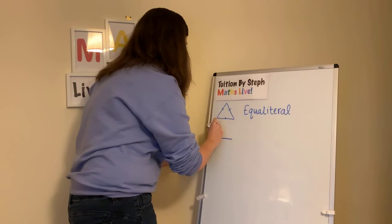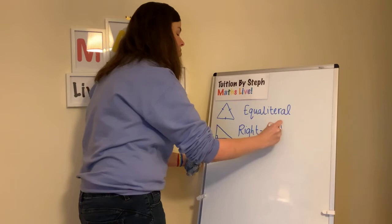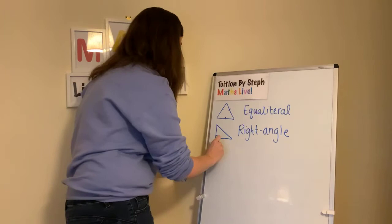The second one is called a right-angled triangle. Why is it called a right-angled triangle? Because it's got a right angle in the corner.